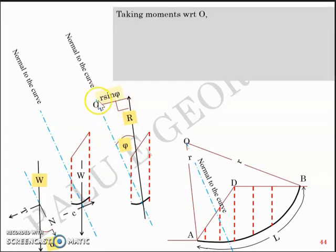So taking moments with respect to O which is the origin of this circle, moment causing failure MO will be T times R. T is nothing but the tangential component of the weight which is acting at a lever arm R.